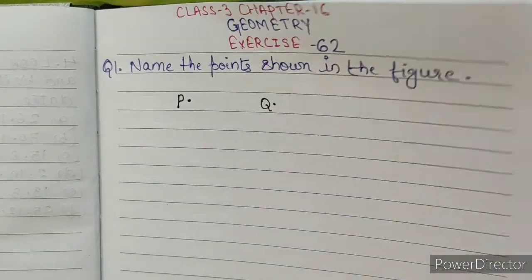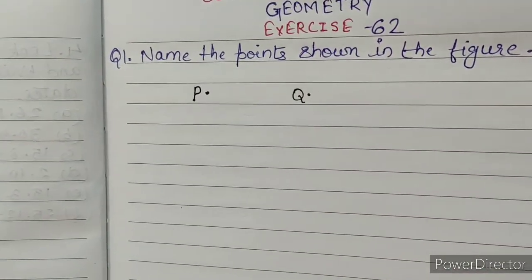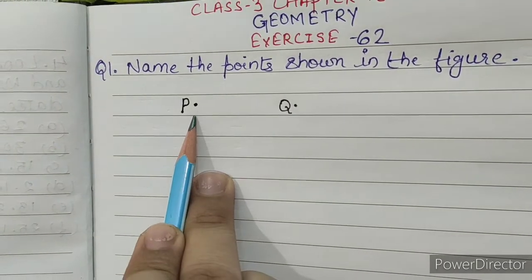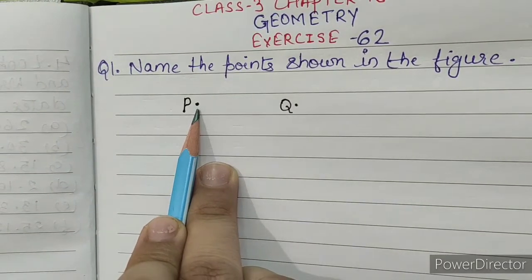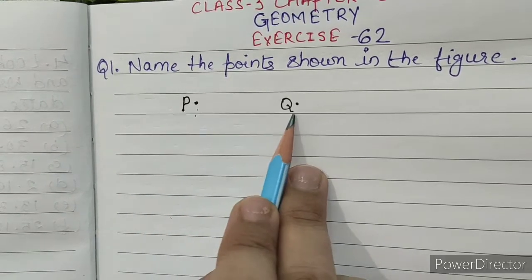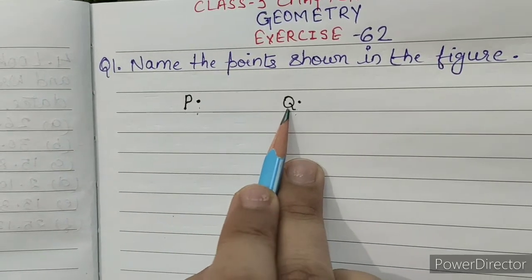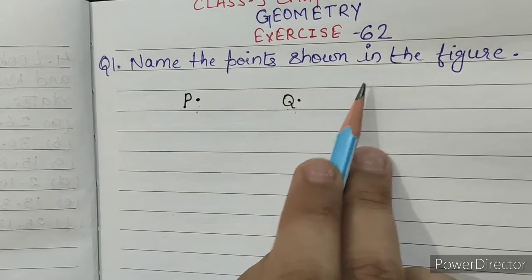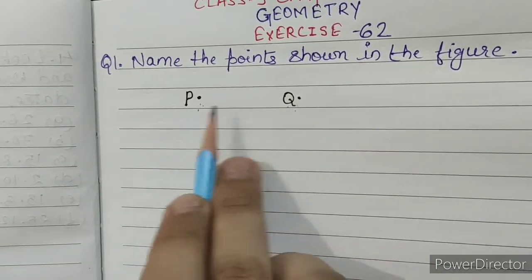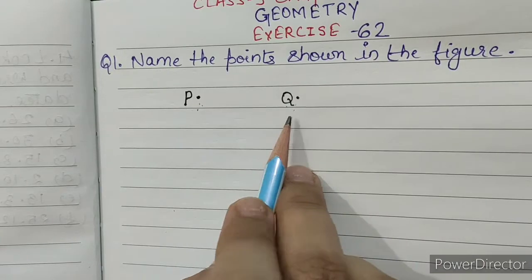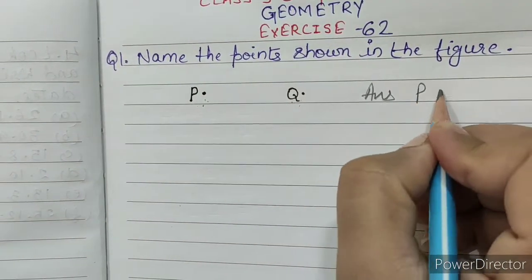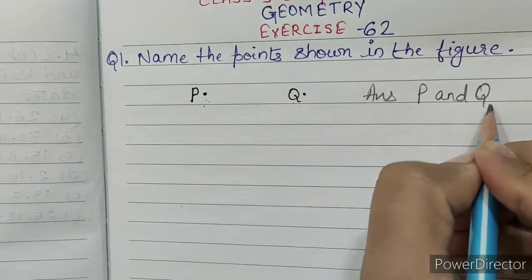Question number 1: name the points shown in the figure. In this question we can see the first point named P and the second point named Q. So there are 2 points. Our answer is P and Q.